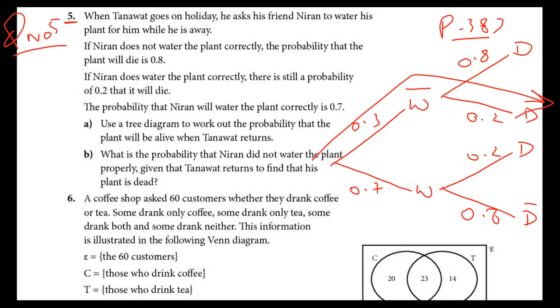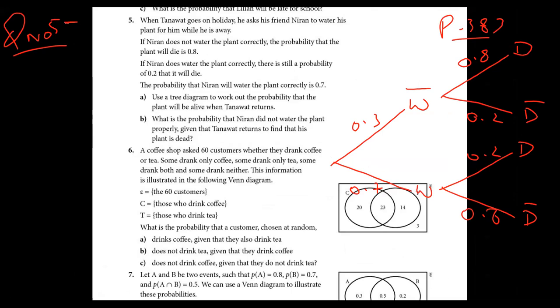So let me write my final answer. Part A: it will not die, will be alive mean not die. So not water and not die, and water and not die. This branch I have this one, and water and not die is this one. So we can answer easily 0.3 times 0.2, and similarly water 0.7 times 0.8. And my answer is coming 31 by 50 or I can write 0.62.